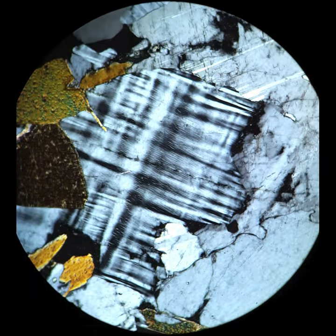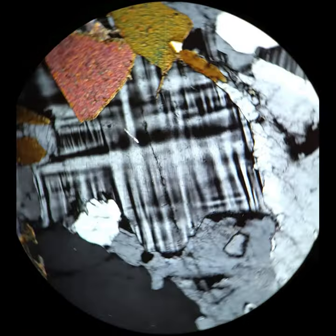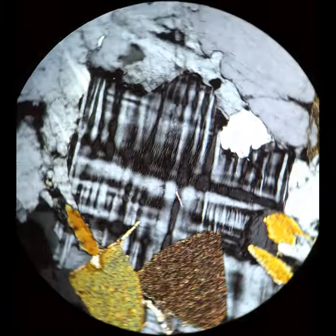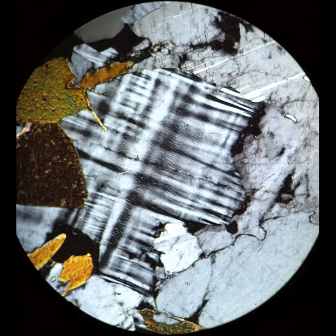It's this grain in the center—low relief, clear, non-pleochroic—but when you cross the polars you get what's called tartan twinning, and it's this crosshatch twinning, gray, black and gray and white, and that is absolutely distinctive of microcline.